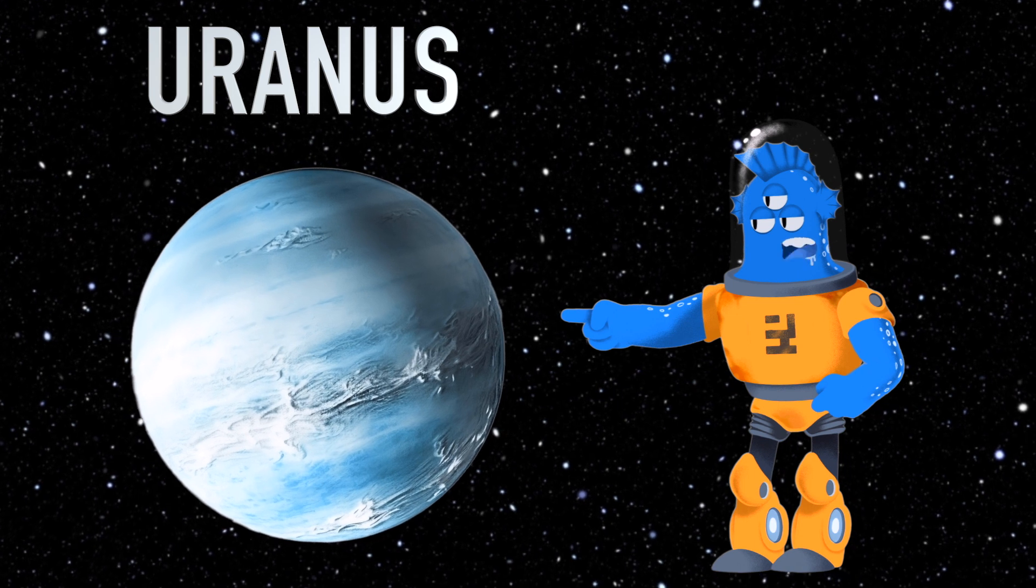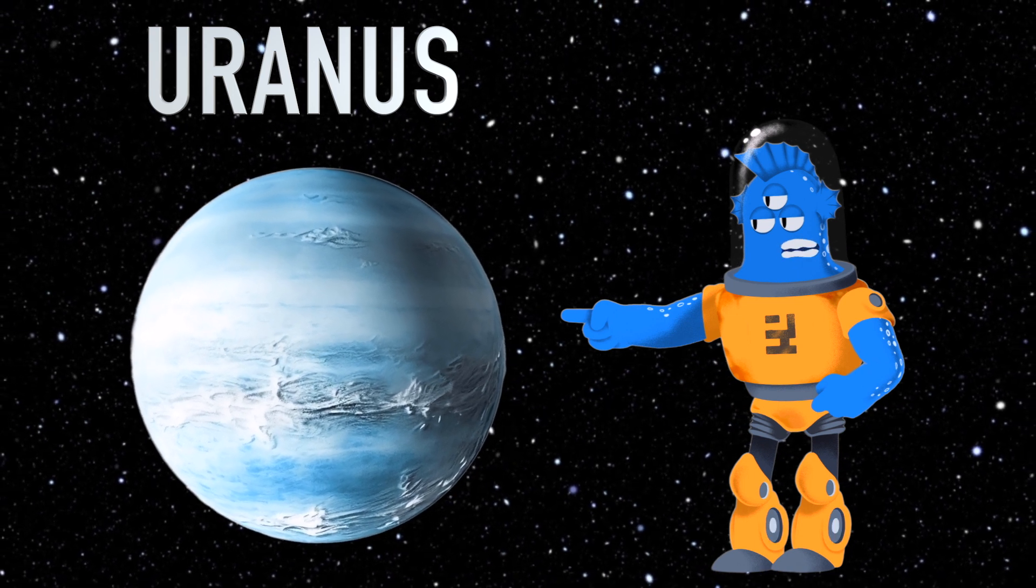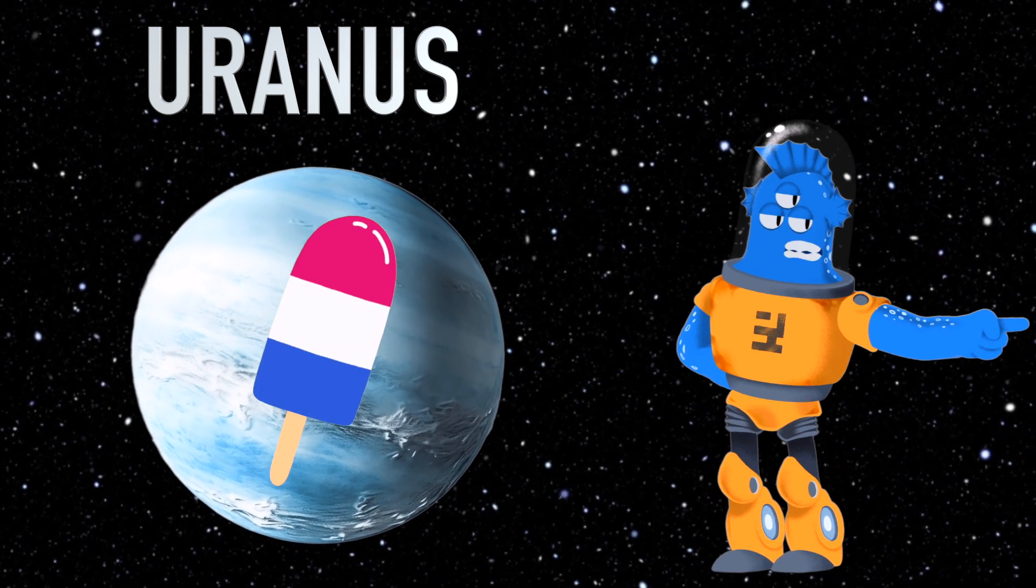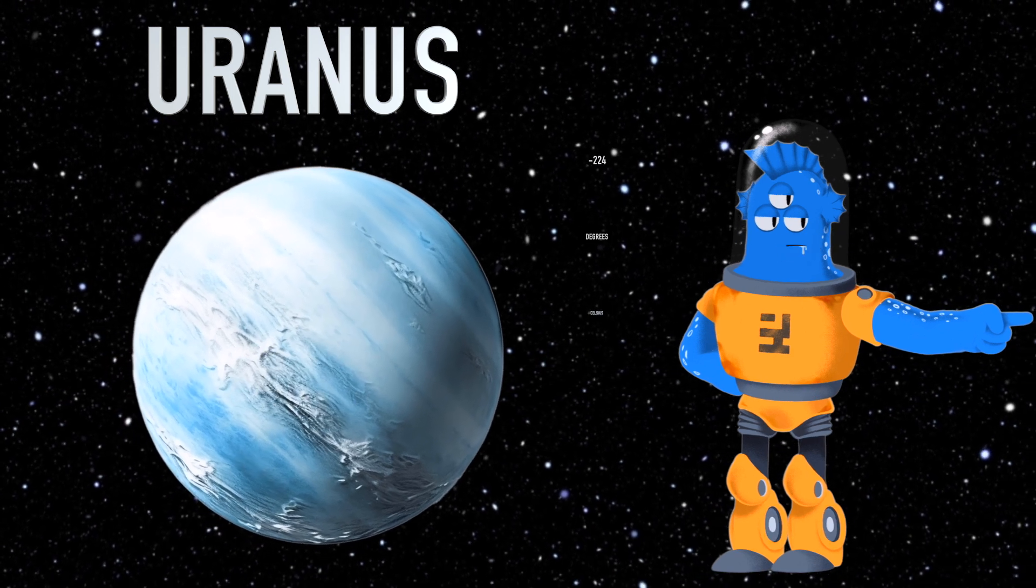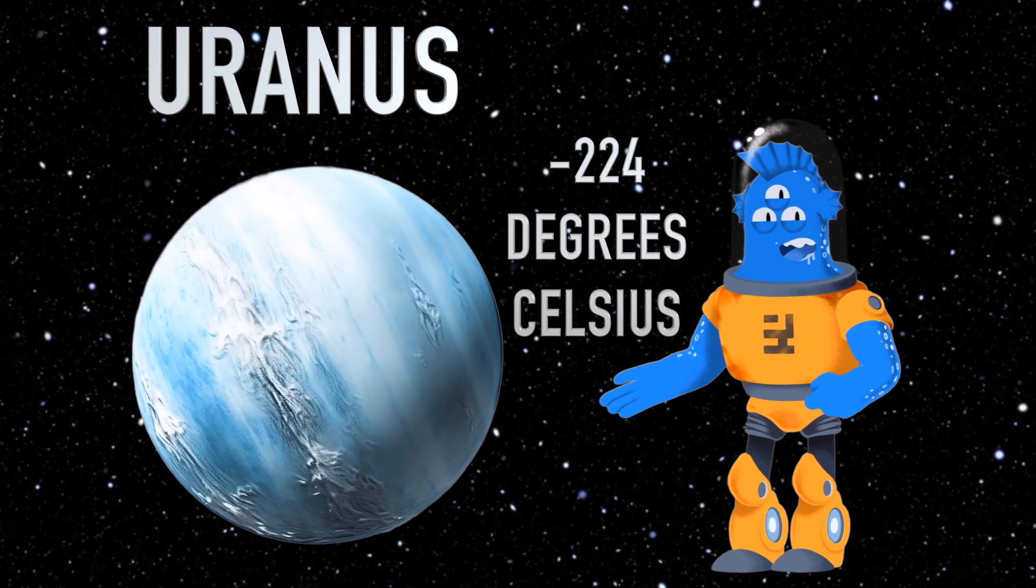Uranus is often called the ice giant because it's incredibly cold. It's like an icy popsicle in space. Temperatures there can plunge to about minus 224 degrees Celsius.